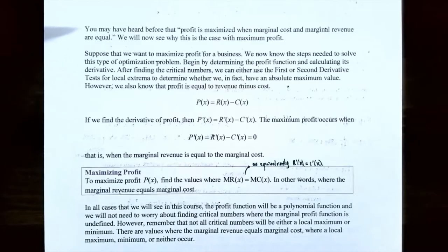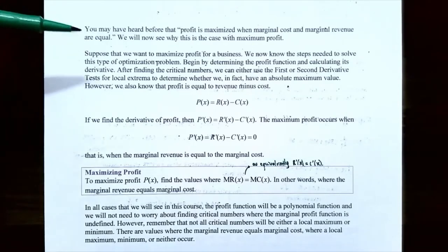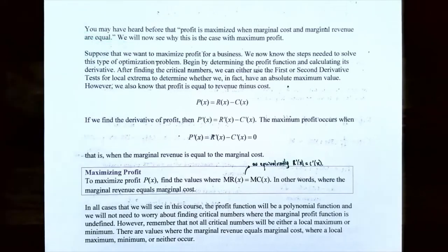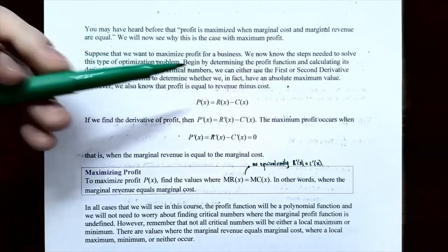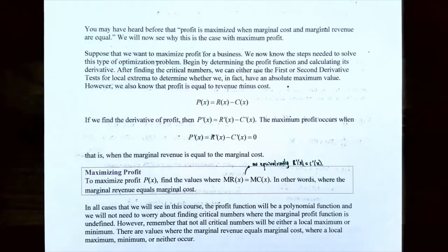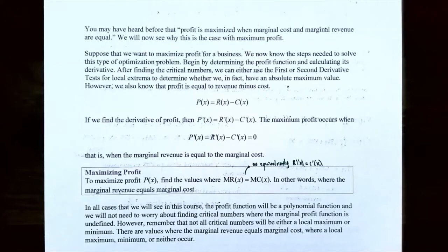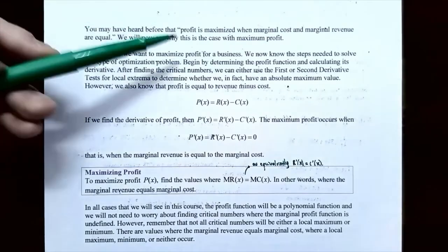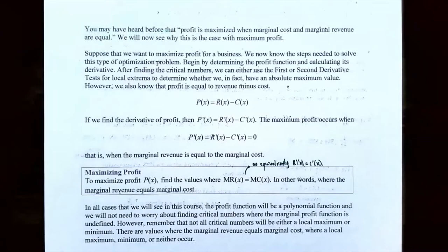You may have heard in a business or economics class that profit is maximized when the marginal cost and the marginal revenue are equal. We're going to see why this is true. Suppose that we want to maximize profit for a business — we now know the steps needed to solve an optimization problem involving the profit function. We can also talk about what this means: you can maximize profit when marginal cost and marginal revenue are equal.